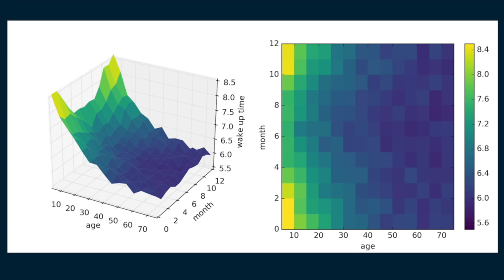On the other hand, adults fall into more regular patterns, fluctuating only slightly with the seasons. Again, older people in this example tend to wake up a little earlier.